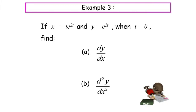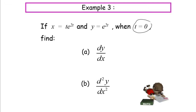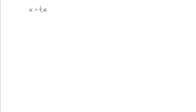Now let's solve example 3. We have x equals t times e to the power of 2t, and y equals e to the power of 2t. When t equals 0, find dy/dx and d²y/dx².